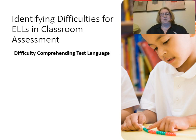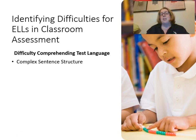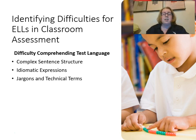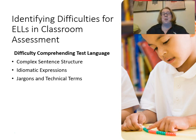Identifying difficulties for ELLs in classroom assessments: there might be difficulty in comprehending the test language. Can they read what the test says? Complex sentence structures can be difficult. Idiomatic expressions — things that aren't the literal truth and have a subtle meaning, like 'it's raining cats and dogs' — may not have a direct translation. Jargon and technical terms: using the language of the discipline is great — I want to use the word 'photosynthesis' if I taught that in class. But we want to avoid overly technical jargon terms that haven't been taught or aren't part of the class vocabulary.